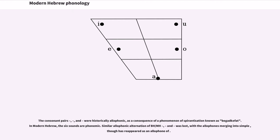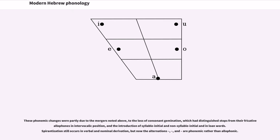The consonant pairs bet-vet, kaf-khaf, and pe-fe were historically allophonic, as a consequence of a phenomenon of spirantization known as begadkefat. In modern Hebrew, the six sounds are phonemic. Similar allophonic alternation of BH/MH bet-vet, gimel-ghayin, and dalet-dhalet was lost, with the allophones merging into simple stops, though ghayin has reappeared as an allophone of ayin.